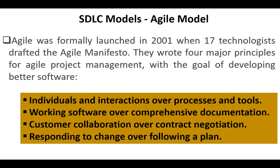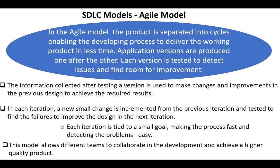The term Agile means the ability to respond to changes. Agile focuses on customer satisfaction and process flexibility by the fast delivery of working software. In the Agile model, the product is separated into cycles, enabling the development process to deliver the working product in less time. Application versions are produced one after the other, and each version is tested to detect issues and find room for improvement. The information collected after testing a version is used to make changes and improvements in the previous design to achieve the required results.